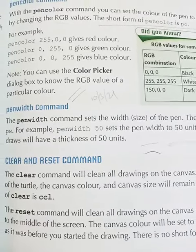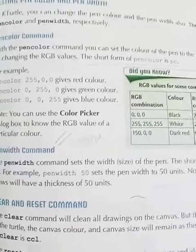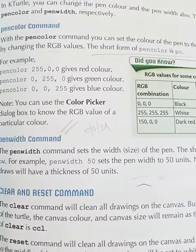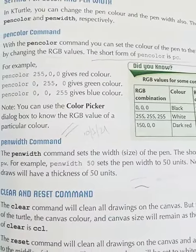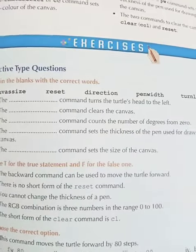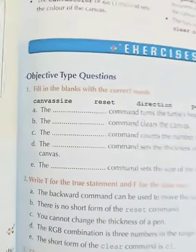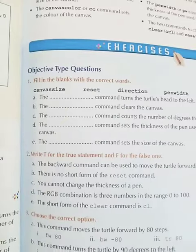All right. So with this, we have finished the chapter. Now come to page number 49. On page number 49, we have exercises and objective type questions.